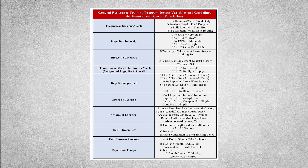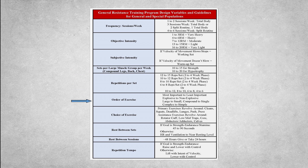While the variables can include a few more above and beyond what is listed here, for general and special populations the primary variables involved in designing a program are: frequency, both objective and subjective intensity, sets per muscle group per week, repetitions per set, order of exercise, choice of exercise, rest between sets, rest between sessions, and repetition tempo.